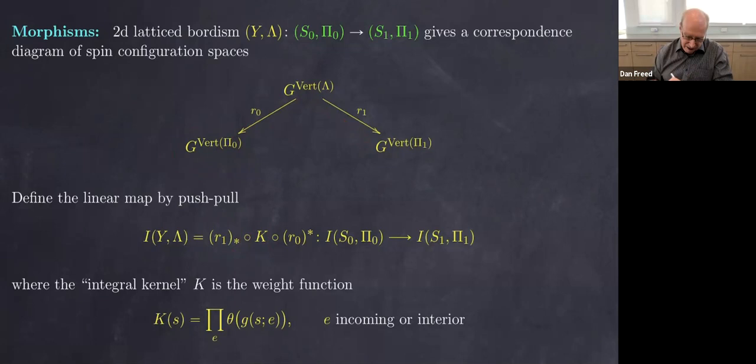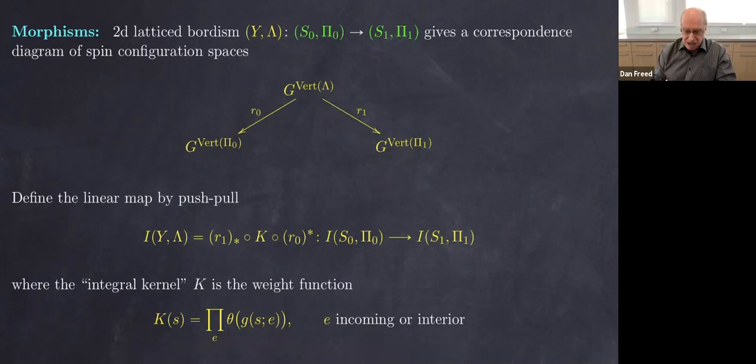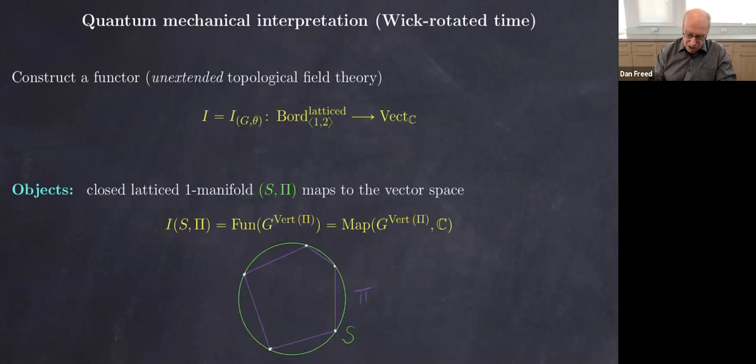This gives an actual functor: when we glue bordisms together, the linear maps compose — this follows formally from the correspondence construction. If we take a one-dimensional manifold with polygons — say a triangle — and cross it with time, we get a triangular prism. Applying the functor gives a linear endomorphism of the vector space attached to the triangle. In statistical physics that's called the transfer matrix, but it has the role of time evolution — representing e^{-H} if the time is one.